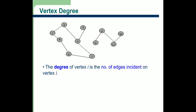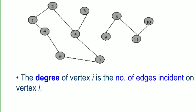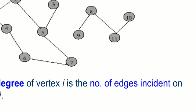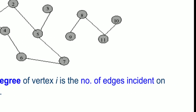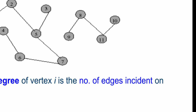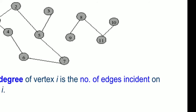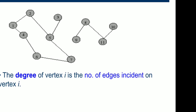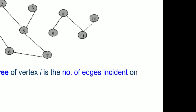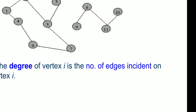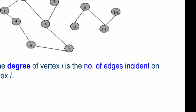For example, looking at node number 5: node 5 participates in 3 edges — (2,5), (3,5), and (5,7). So the degree of vertex 5 is 3. Similarly, node 6 participates in 2 edges — (4,6) and (6,7). Therefore, the degree of 6 is 2.